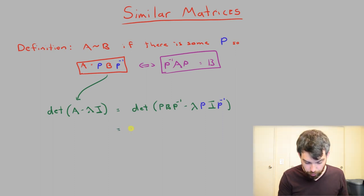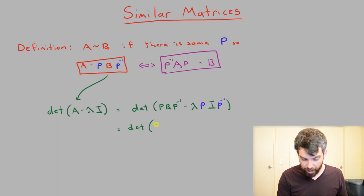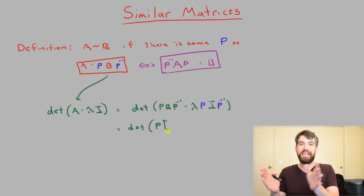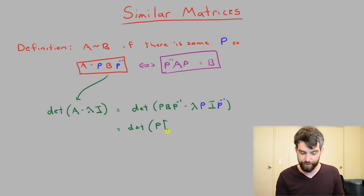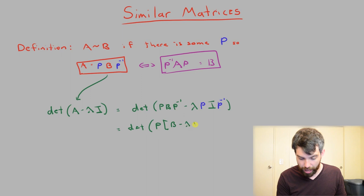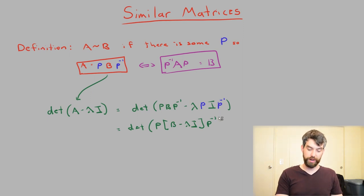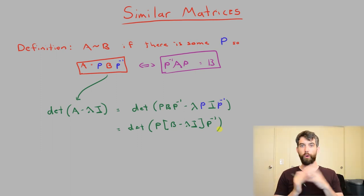I'm going to do some further algebra here. I'm going to say that this is the determinant of, well, I'm going to put a P all the way out the front because I noticed there's a P out the front of both expressions. That's going to leave me with B minus lambda I. And I also have a P inverse on the right hand side of both expressions. So I'm allowed to factor that out as well. I'm just factoring out the common factor of P and the P inverse.